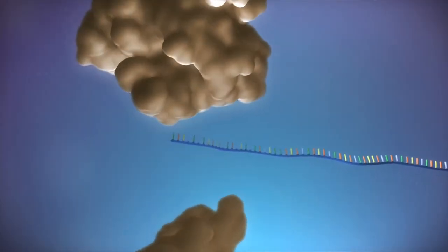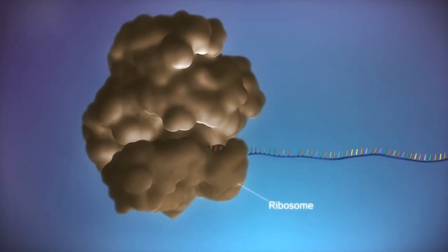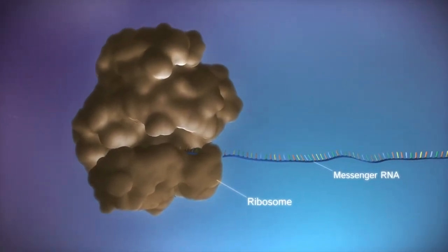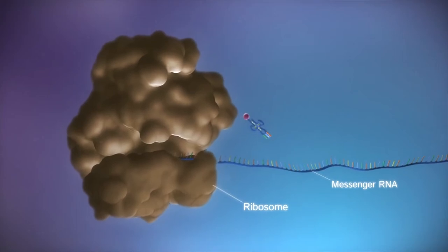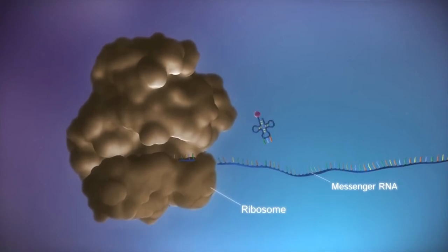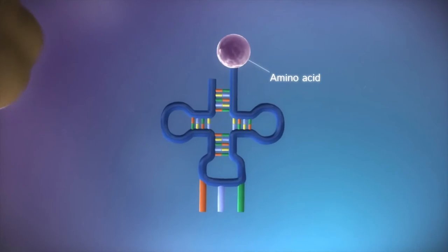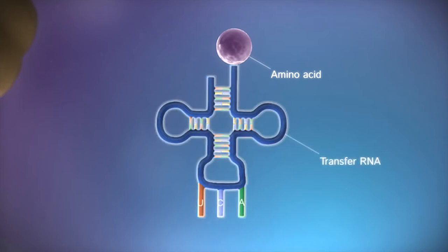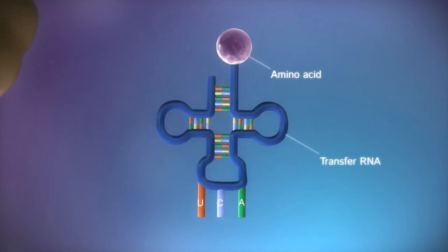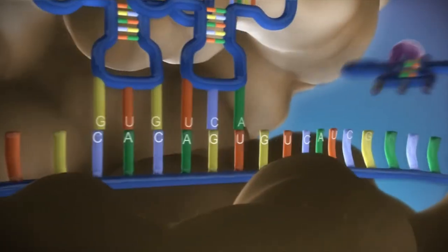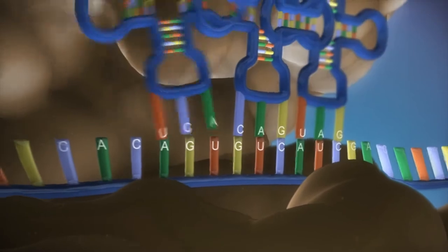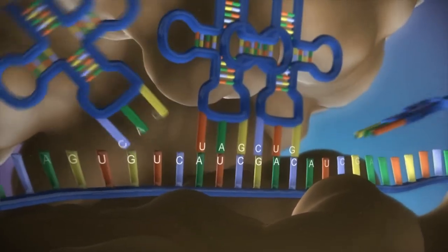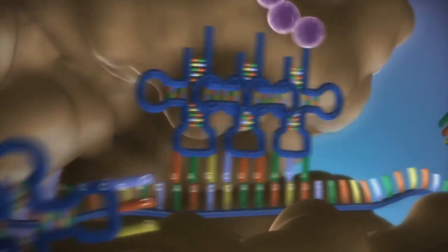We're moving from the nucleus outward to the endomembrane system. We can take some of those ribosomes and stick them onto the endoplasmic reticulum. The endomembrane system is all the little compartments used to keep things sequestered from each other. For example, lysosomes are where we put enzymes that break stuff down — you don't want those enzymes just floating around freely.